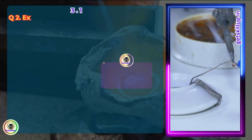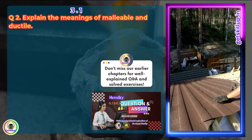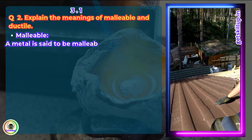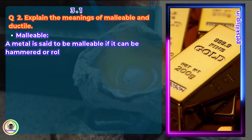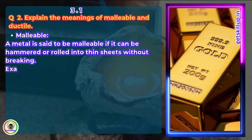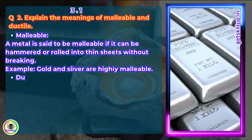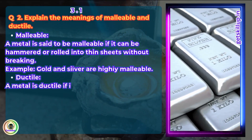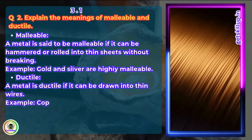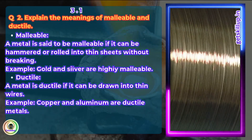Question 2. Explain the meanings of malleable and ductile. Malleable: A metal is said to be malleable if it can be hammered or rolled into thin sheets without breaking it. Gold and silver are highly malleable. Ductile: A metal is ductile if it can be drawn into thin wires. Copper and Aluminium are ductile metals.